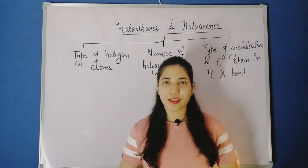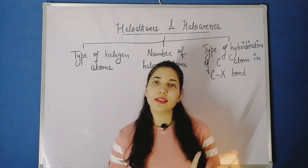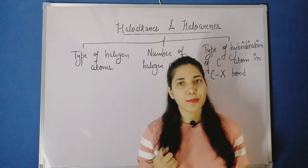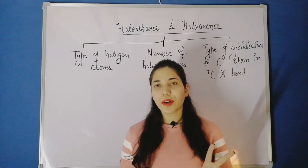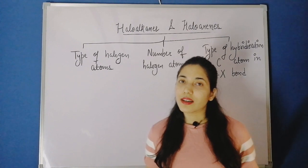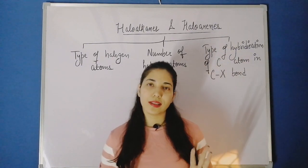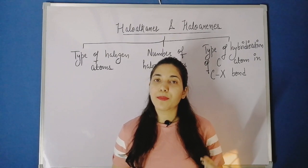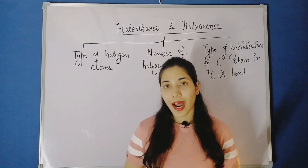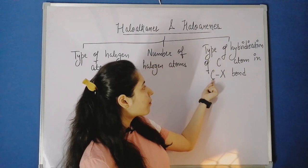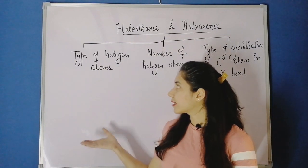We can classify these compounds on the basis of three types. First, on the basis of the type of halogen atom involved. Second, on the basis of the number of halogen atoms present. Third, on the basis of the type of hybridization of the carbon atom in the carbon-halogen bond.